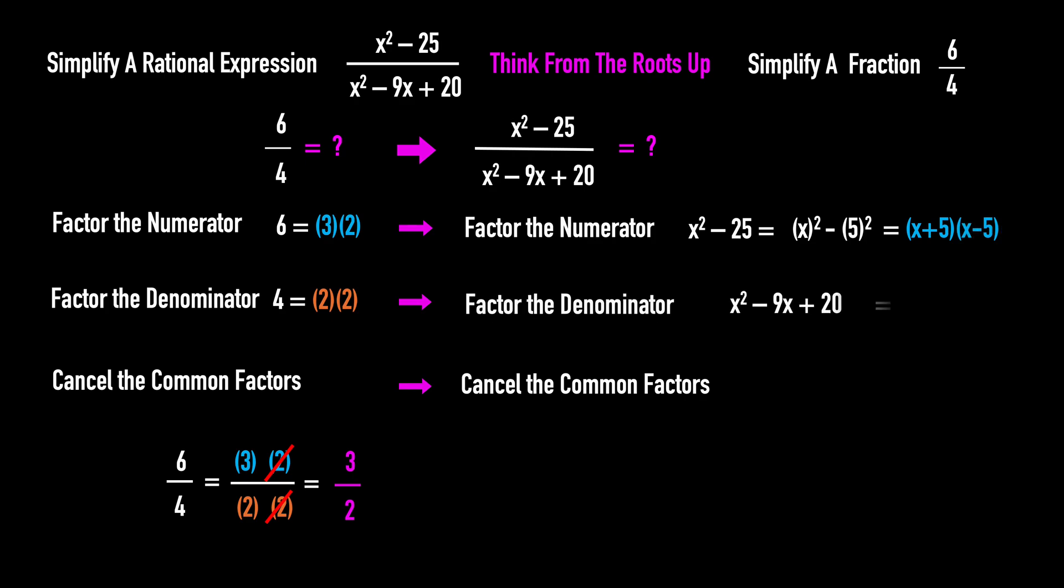Factor the denominator. Factor 20 as negative 4 times negative 5, then check: negative 4 plus negative 5 gives negative 9. So we have (x - 4)(x - 5).